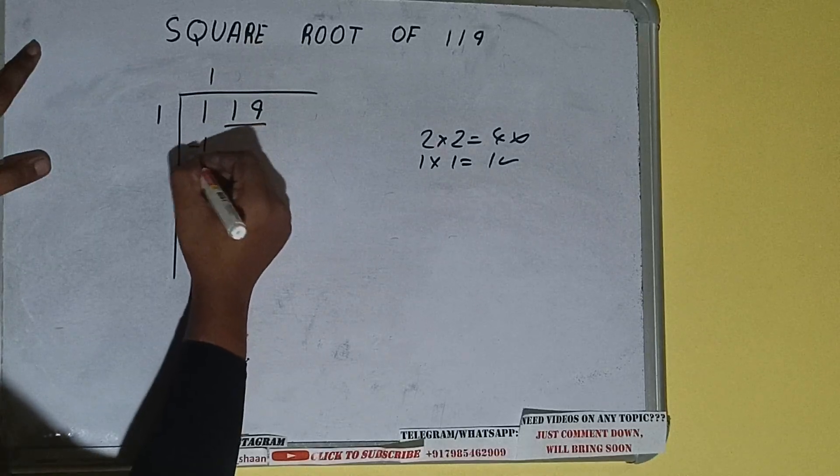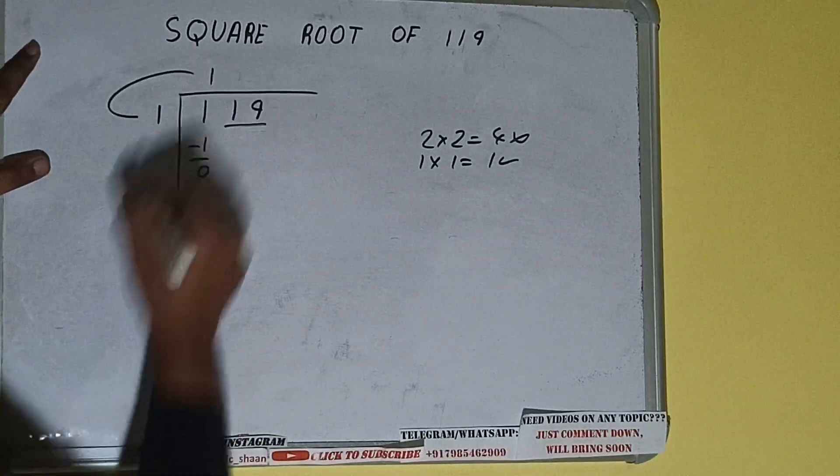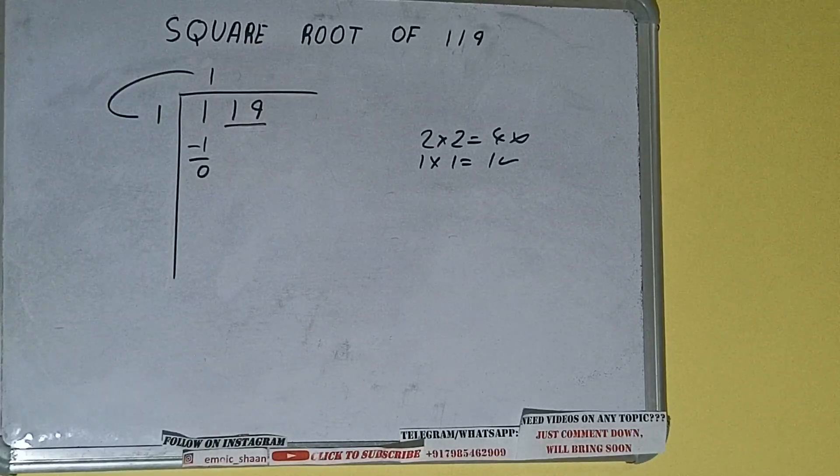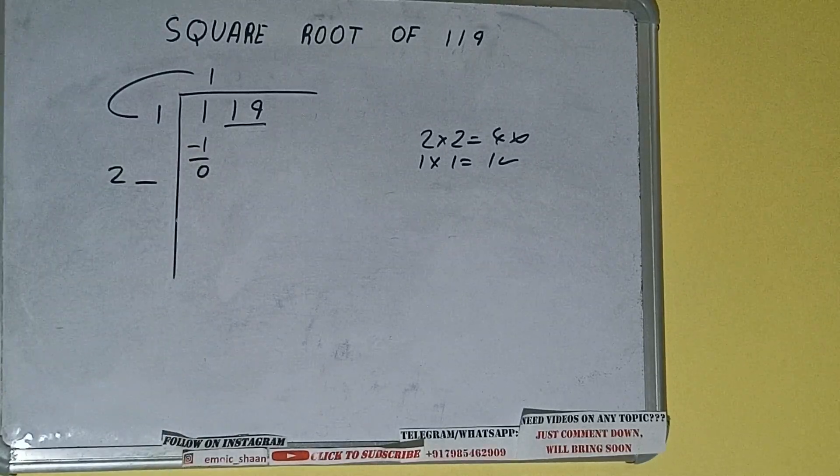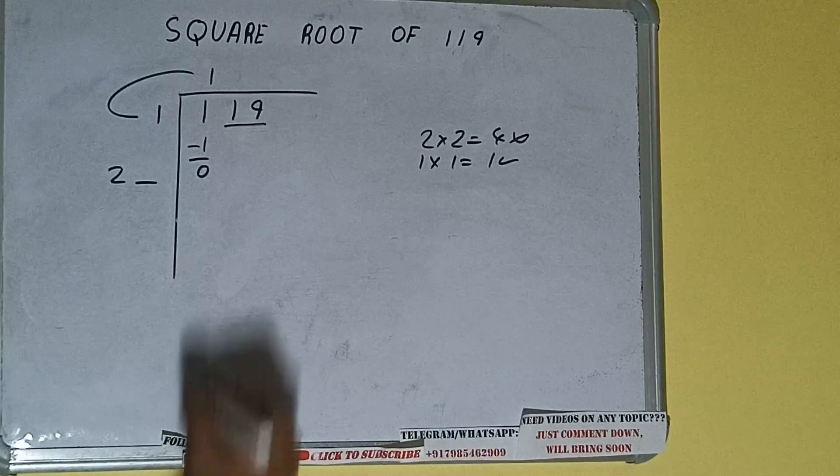So 1 here and 1 here, 1 subtract, 0 will be left. We did 1 into 1, so add both. 1 plus 1 will be 2. Write it here and keep a digit extra, and this number we need to make it big.